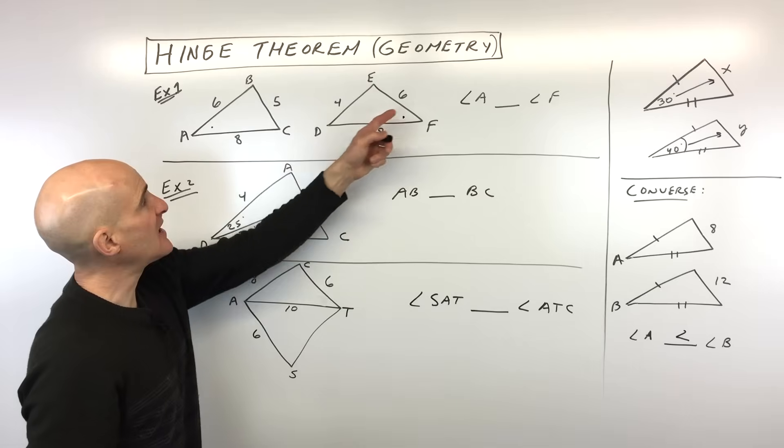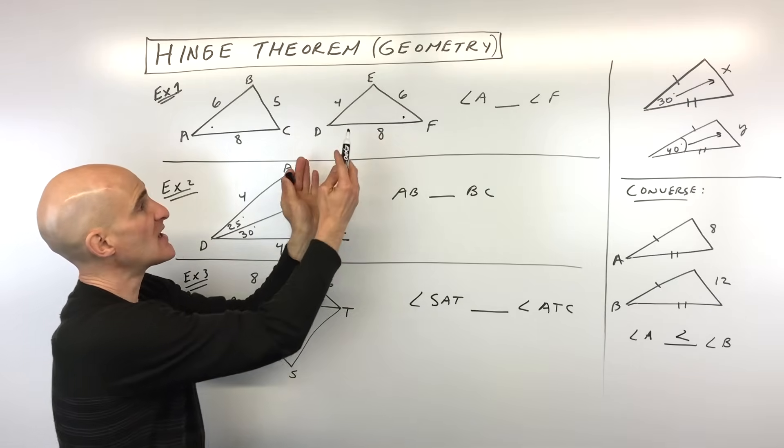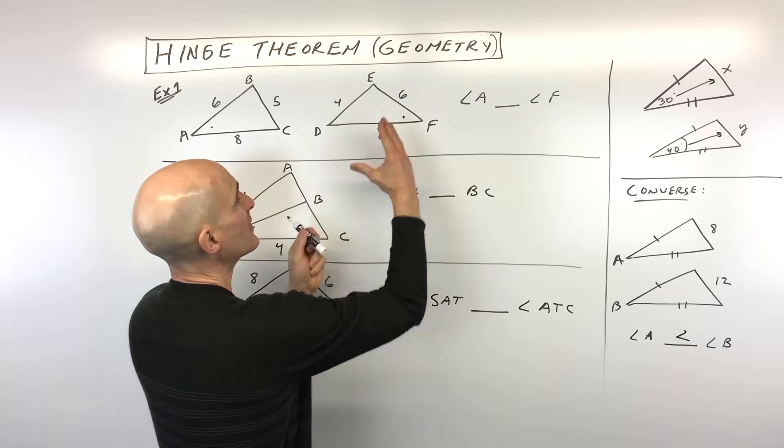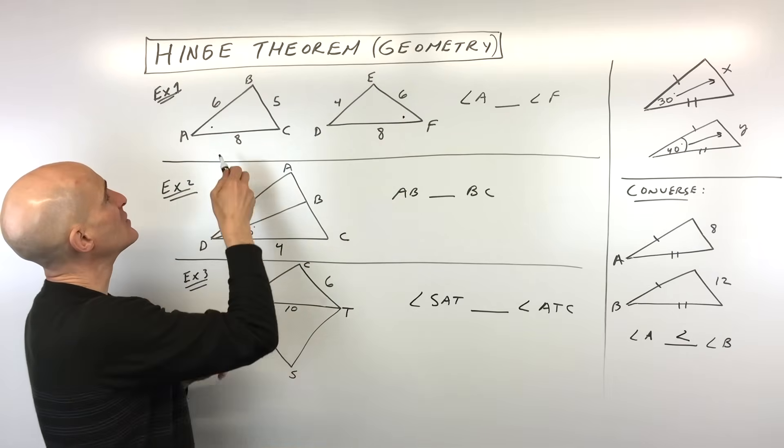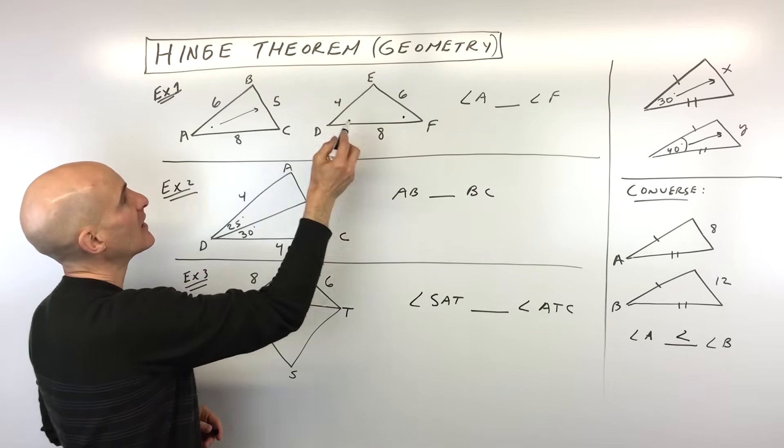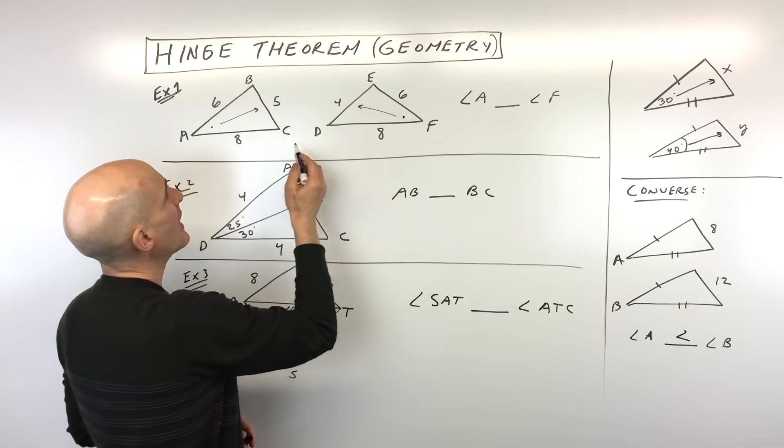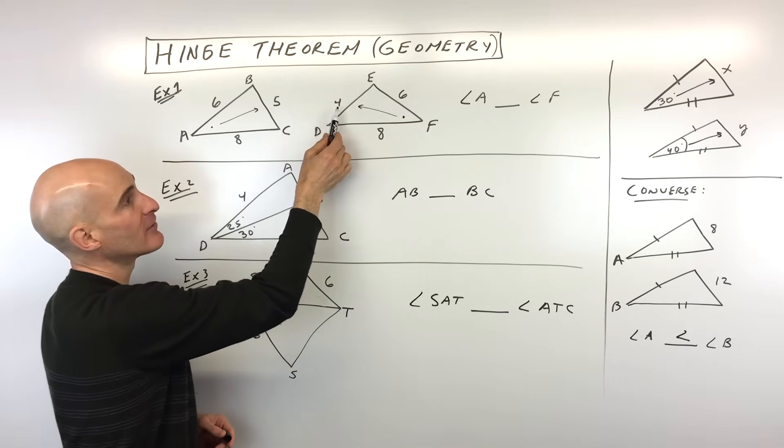Well again, notice we have 6 and 8, 6 and 8, okay? So those two sides that are making up the angle, right? Those two sides are making up that angle. What we have to do is we have to look across from that angle.